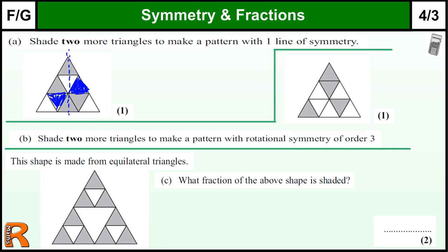Now shade two more triangles to make a pattern with rotational symmetry of order three. Rotational symmetry means if we spin the shape around, it fits on top of itself one, two, three times. But at the moment, if I spin it around so it fits there...